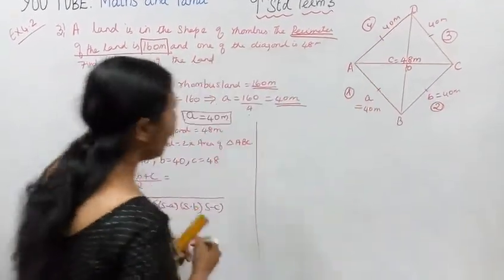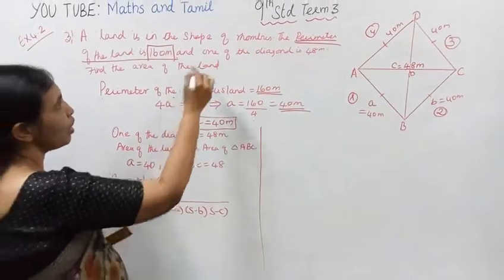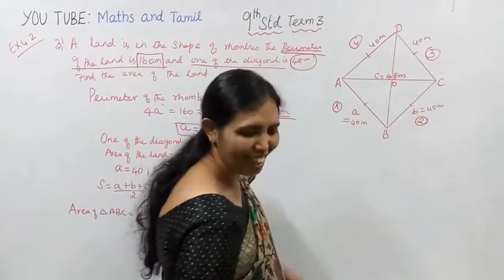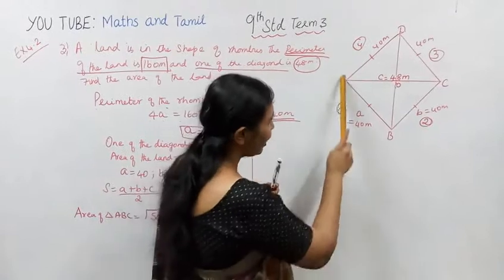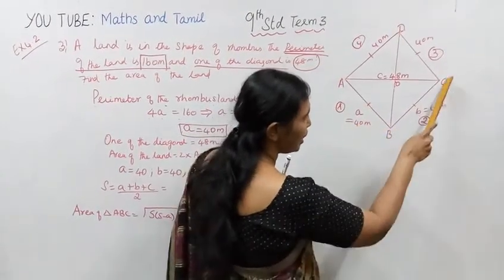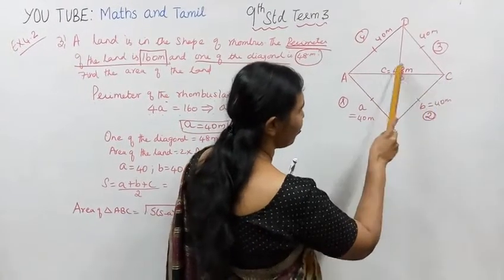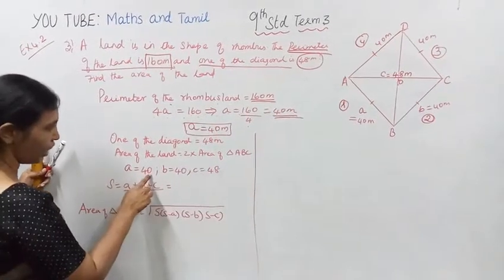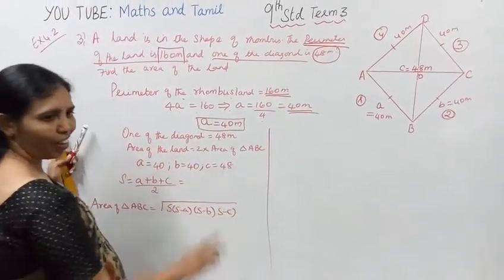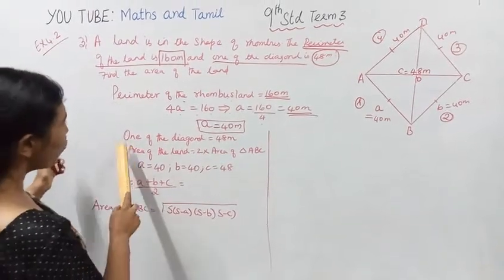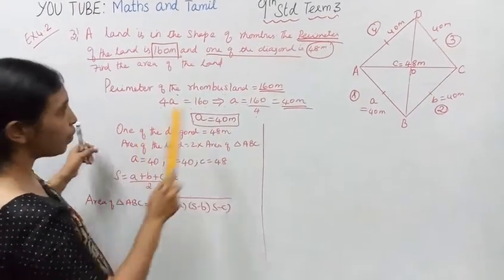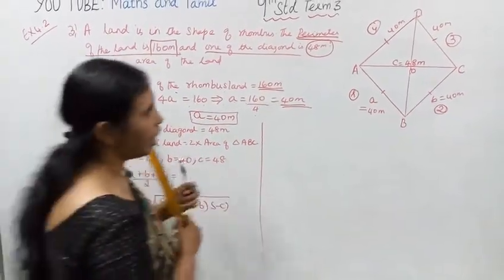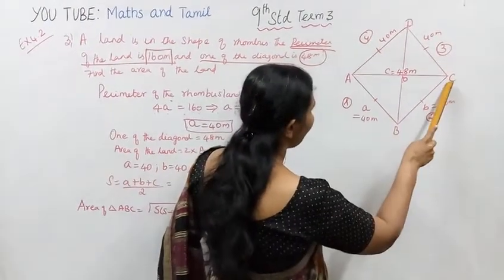So a is 40 meters, b is 40 meters, and c is 40 meters. One of the diagonals is 48 meters. AC is 48 meters. So a is 40, b is 40, c is 48.